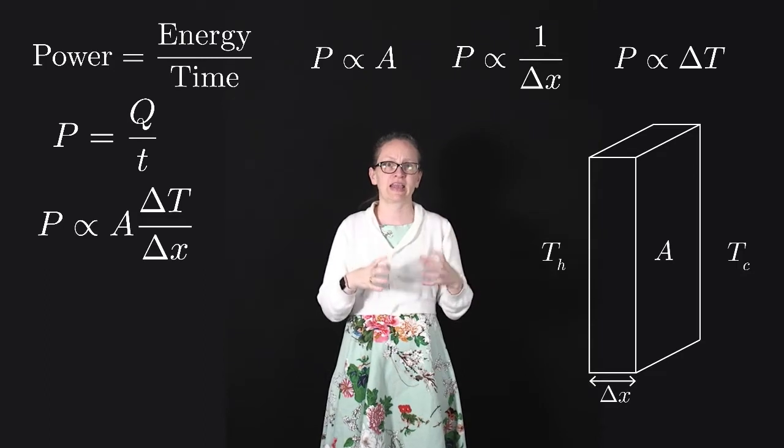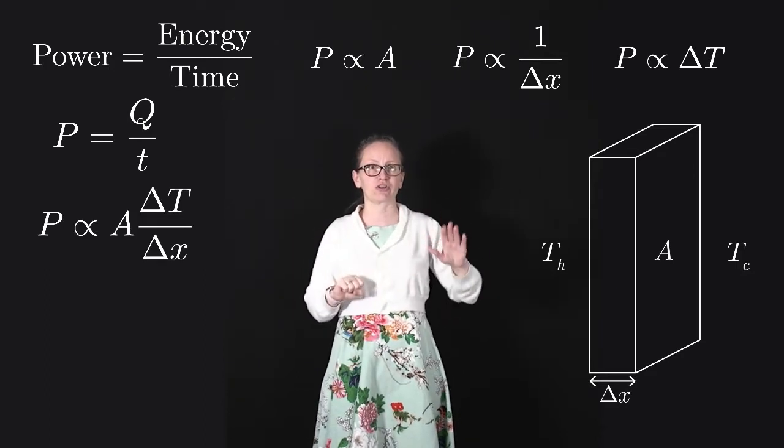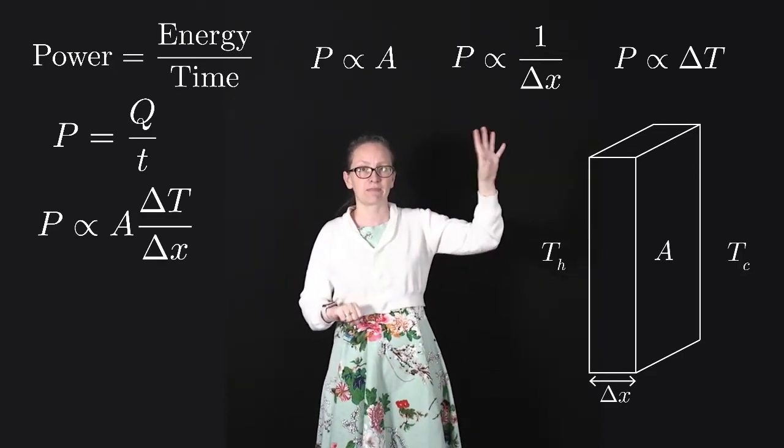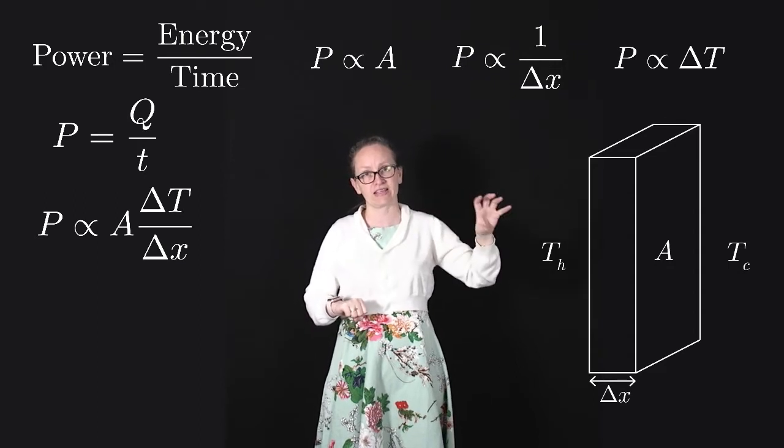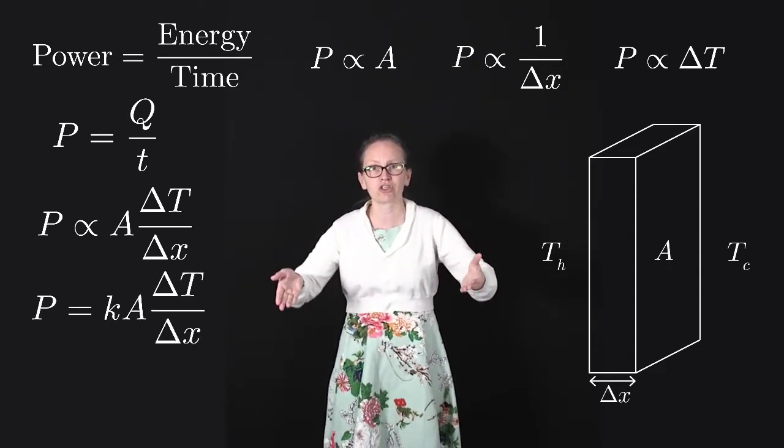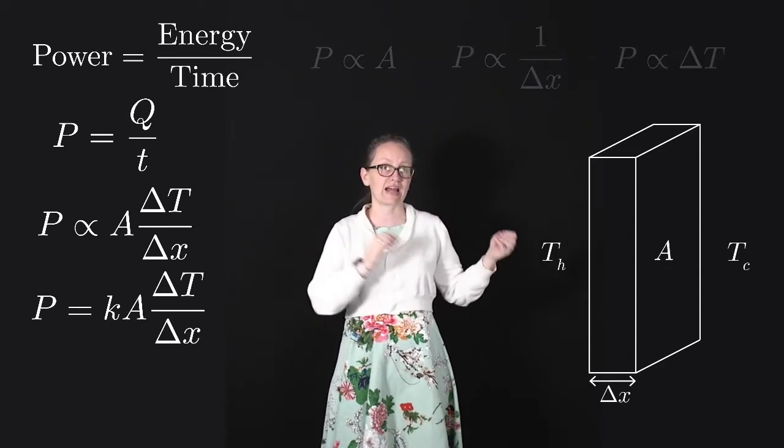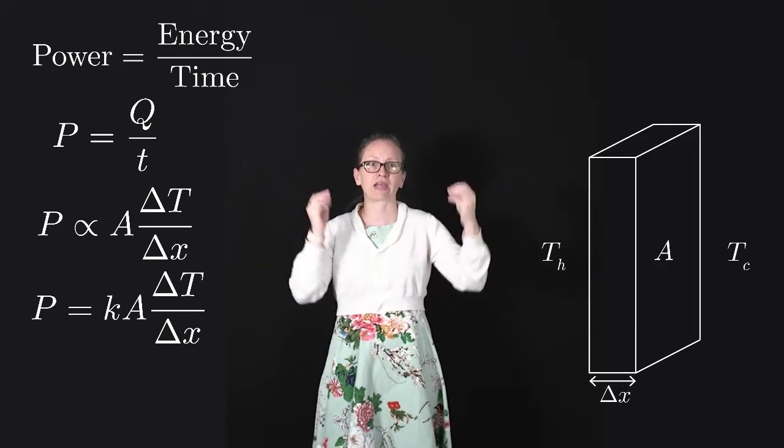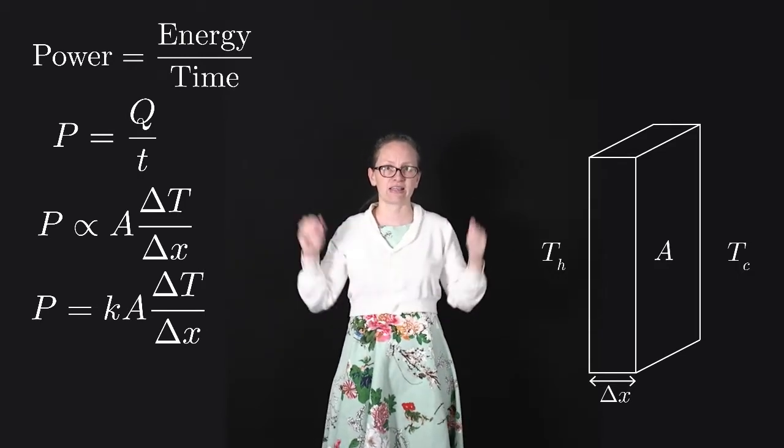So combining these together, we can say the power is proportional to the area times the temperature difference divided by thickness. And because this is proportional, we can replace it with a proportionality constant, which we will call K.